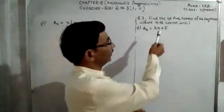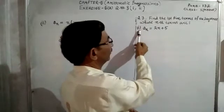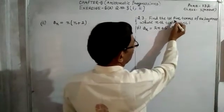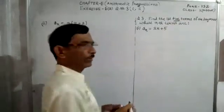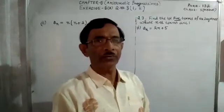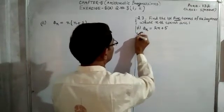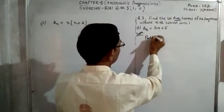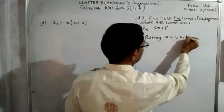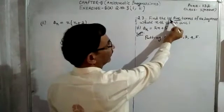What is the question? Find the first 5 terms of the sequence whose nth term is given. So question number 3, sub number 1. The nth term is given by this formula. We have to find the first 5 terms. That means we have to take the value of n equal to 1, 2, 3, 4, 5.